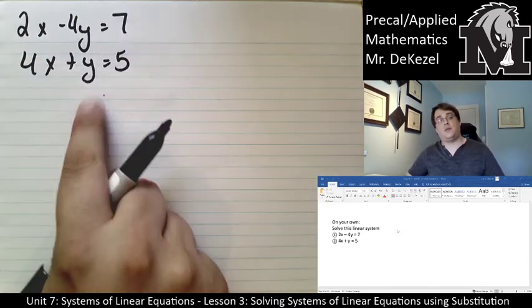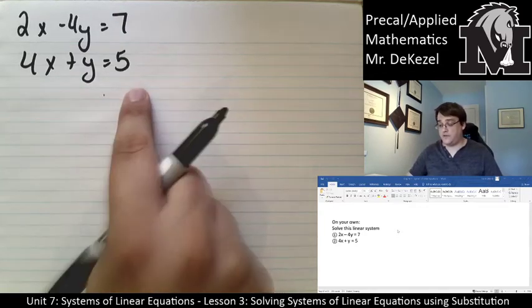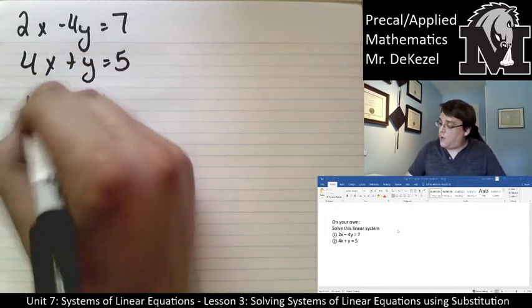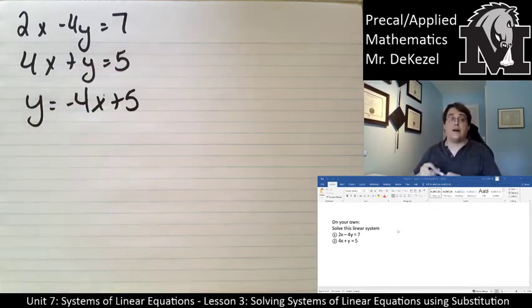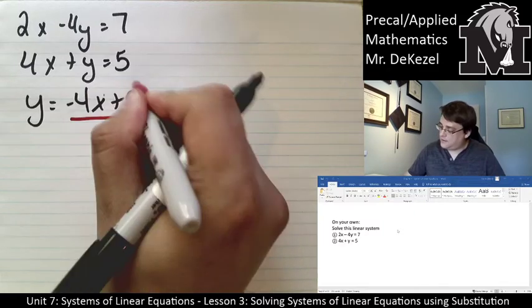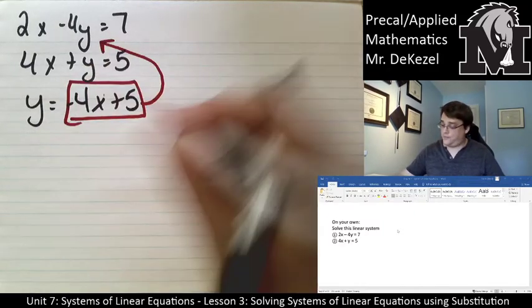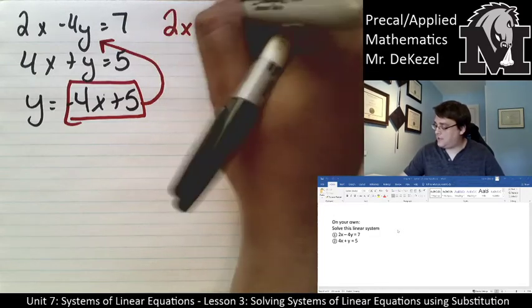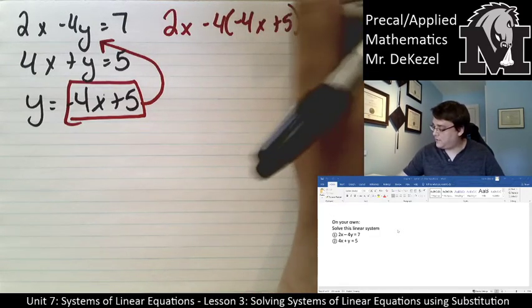This second equation is really easy to rearrange and there's not going to be no fractions involved. I just moved the 4x over. So I'm going to do that. y is equal to negative 4x plus 5. I can now take this and plug it in to the other equation for the y value.